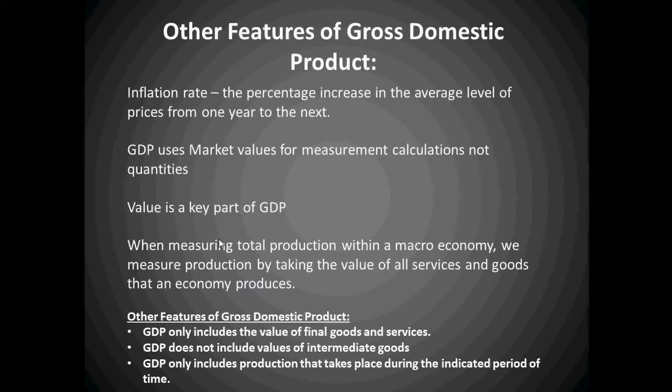For example, when looking at a vehicle, you're looking at what the total vehicle is worth, not all the parts that are produced within a country to create it. Value is a key part of GDP. When measuring total production, we take the value of all services and goods an economy produces. GDP does not include values of intermediate goods. Tires would be an intermediate good, while a vehicle or piece of machinery would be a final good — something ready to go to the consumer.